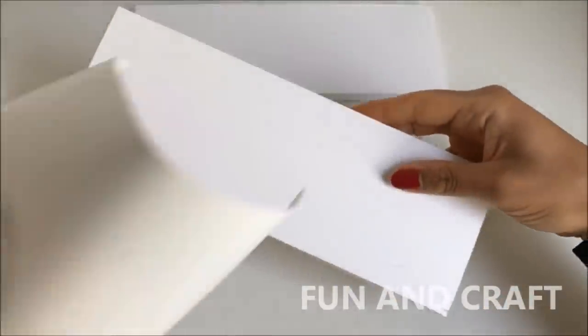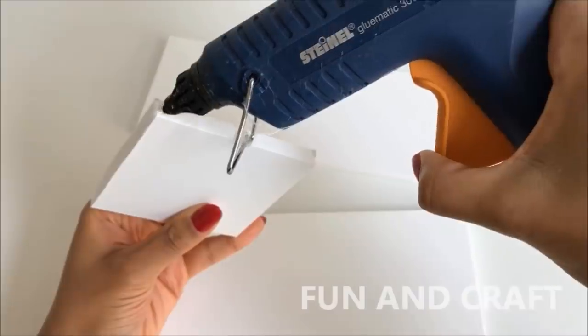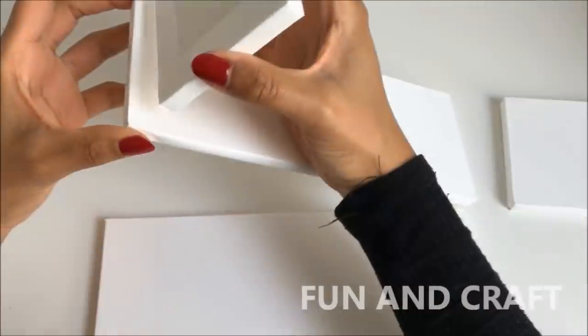And now you will need more foam board pieces to make the top. Cover all of them in white contact paper and glue them together. Make sure that the good side is on the inside.